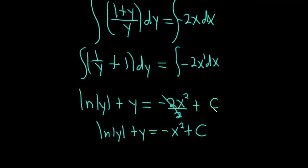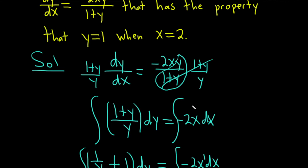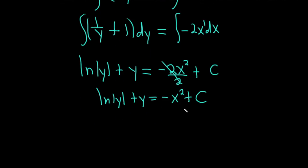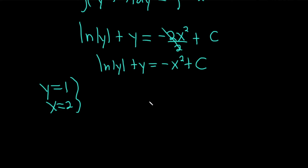So now we have to use our condition. It says that y is 1 when x is 2. So we have to impose our condition. Basically now we're going to put a 1 everywhere we see a y and a 2 everywhere we see an x, and solve this for c.